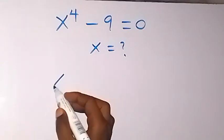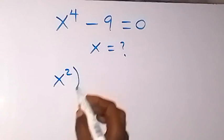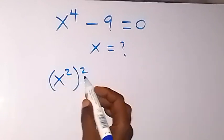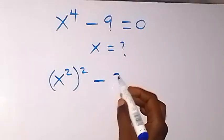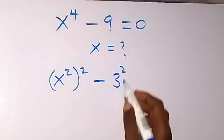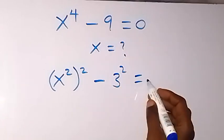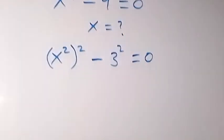From here, let's write this as x squared, the whole squared. This is the same thing as x raised to power 4, then minus 3 squared, which is the same thing as 3 times 3, that is 9, equals 0. And here, this follows the difference of two squares.